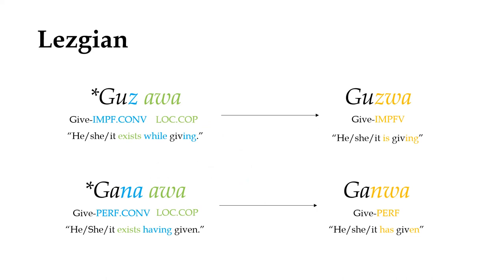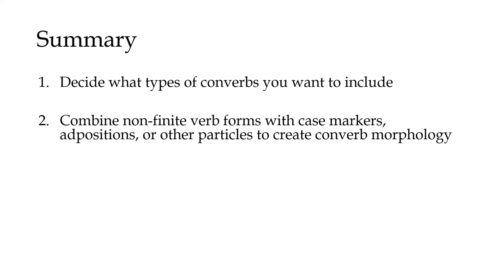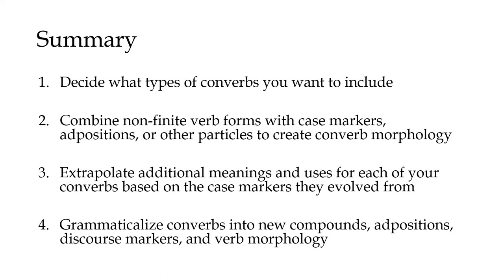The ability of converbs to turn any verb phrase into a modifier makes them incredibly useful and versatile, and so a language that employs converbs to any degree will likely have them manifest in many areas of its grammar. So in summary, if you want to include converbs in a conlang: decide what types of converbs you want to include, combine non-finite verb forms with case markers, adpositions, or other particles to create converb morphology, extrapolate additional meanings and uses for each of your converbs based on the case markers they evolved from, and grammaticalize converbs into new compounds, adpositions, discourse markers, and verb morphology.